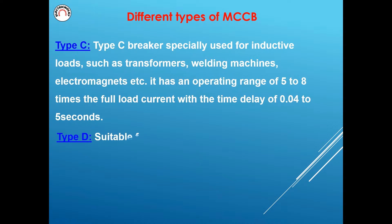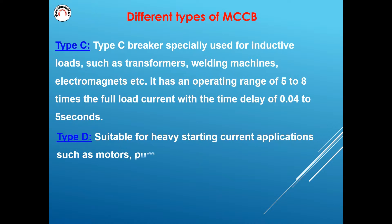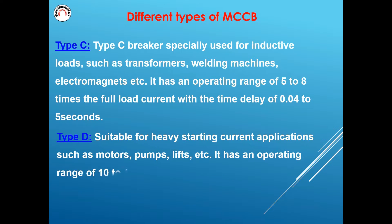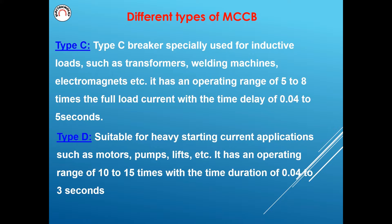Type D. Type D is suitable for heavy starting current applications such as motors, pumps, lifts, etc. It has an operating range of 10 to 15 times the full load current with a time duration of 0.04 to 3 seconds.